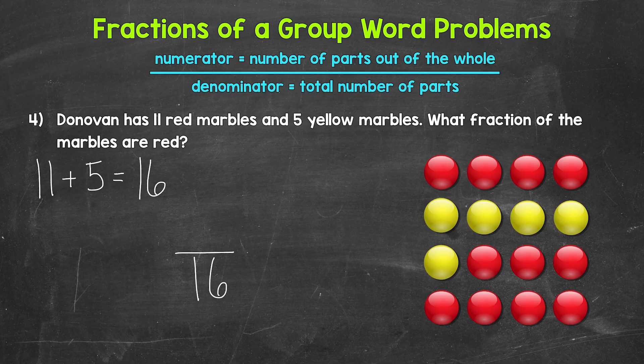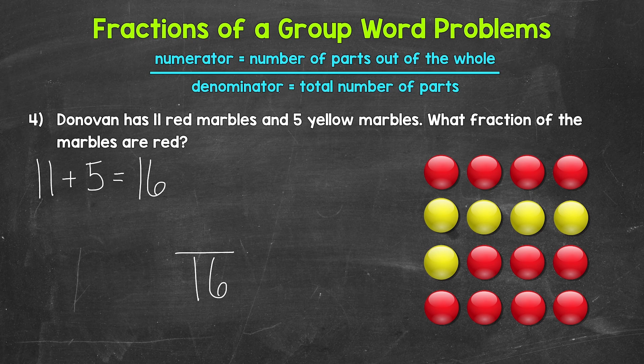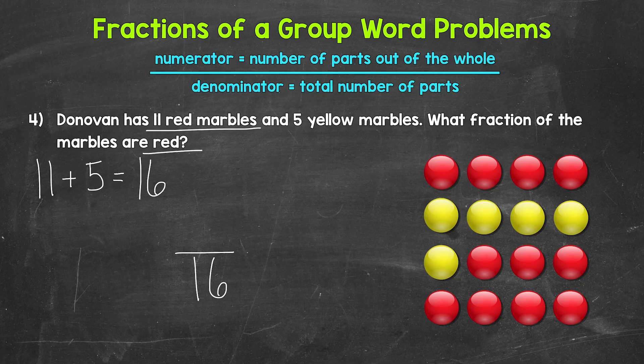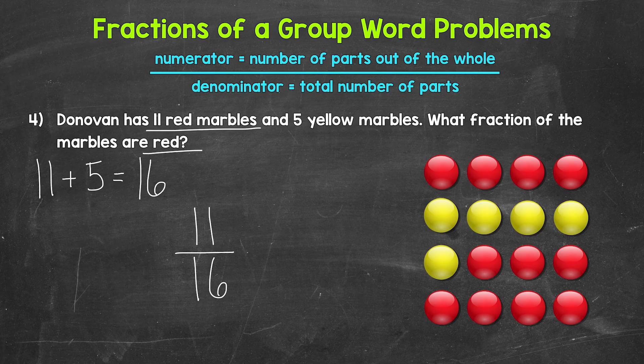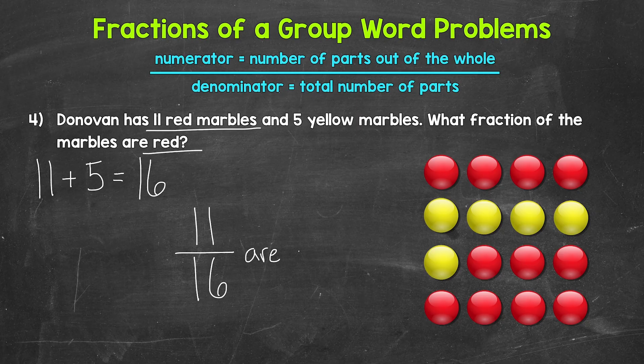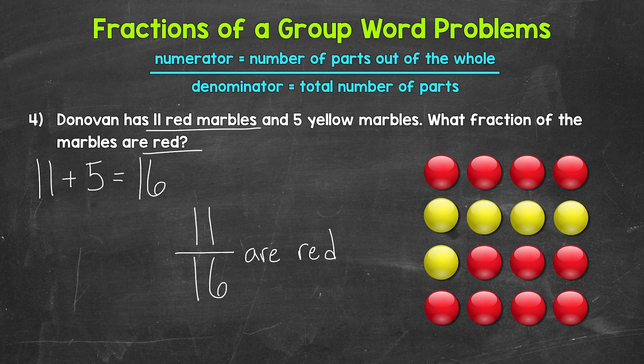Now we need the numerator. And we're looking for the fraction of the marbles that are red. Donovan has 11 red marbles. So 11 is the numerator. 11 marbles out of the 16 total marbles are red. Our fraction here, 11 sixteenths. 11 sixteenths of the marbles are red. So now that we've gone through some examples together, it's time for you to try some practice problems on your own.